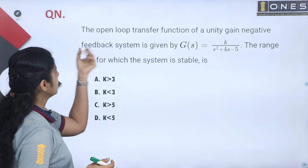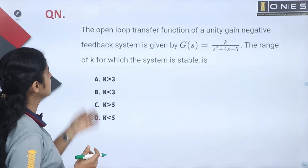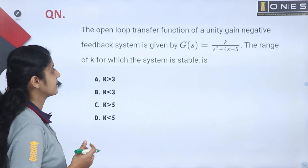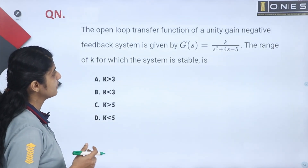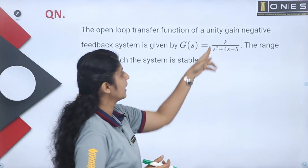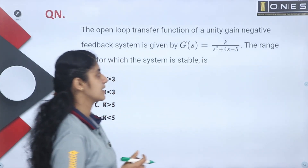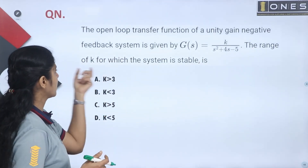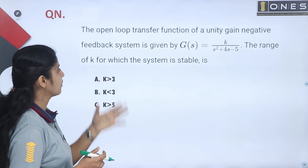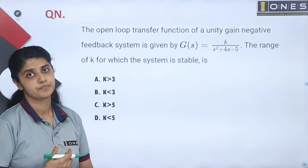Question 1 is: the open loop transfer function of a unity gain negative feedback system is given by G(s) = k divided by s squared plus 4s minus 5. Find the range of k for which the system is stable.